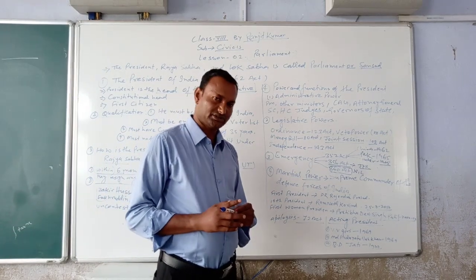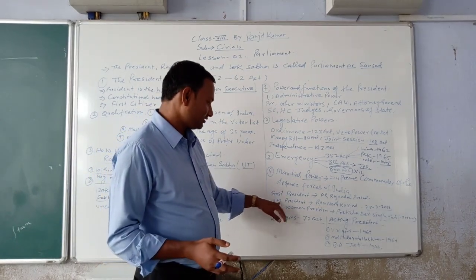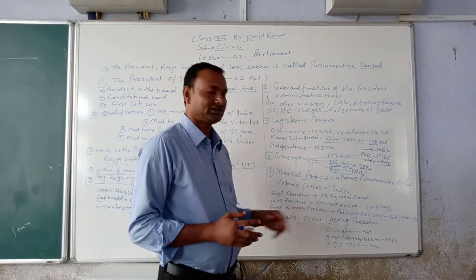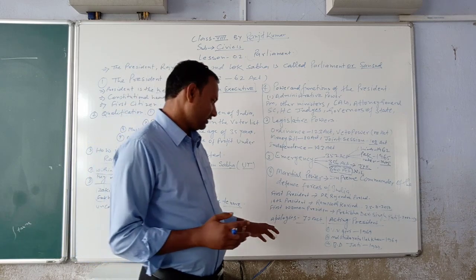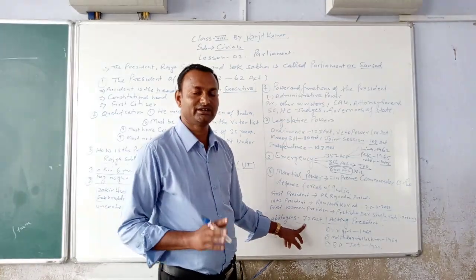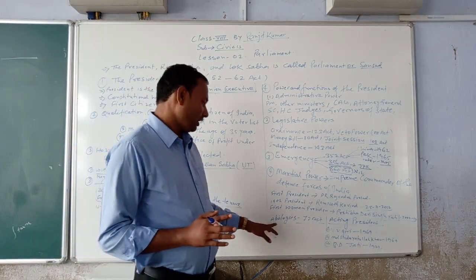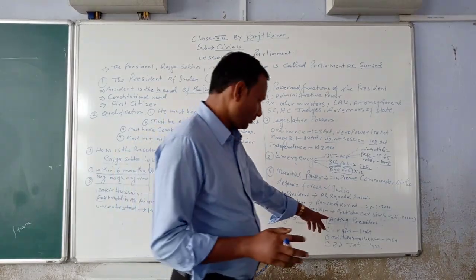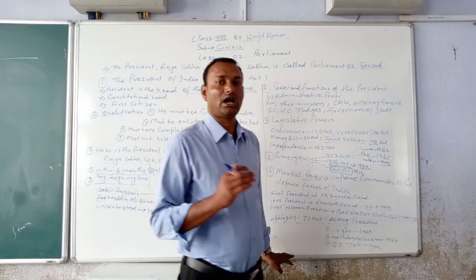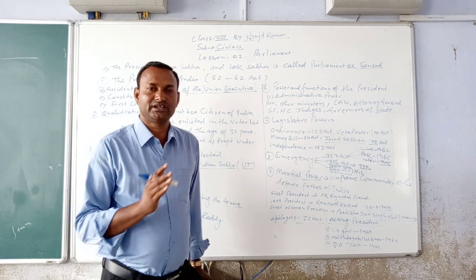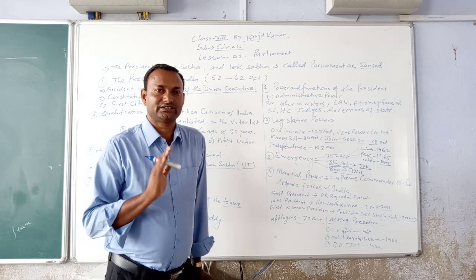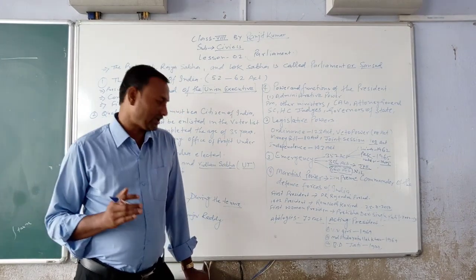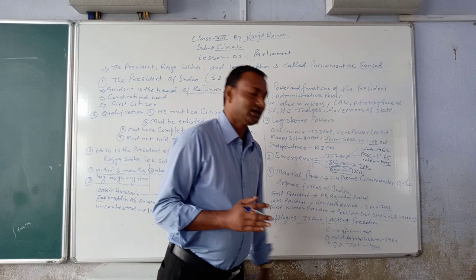Regarding the list of Presidents: the present President was elected in 2017, and the first woman President was from the Bhartiya Janata Party, elected in 2007. Article 72 is very important — it deals with the pardoning power of the President. Acting Presidents in India: first was V.V. Giri in 1969, second was M. Hidayatullah in 1969, and third was B.D. Jatti in 1977.